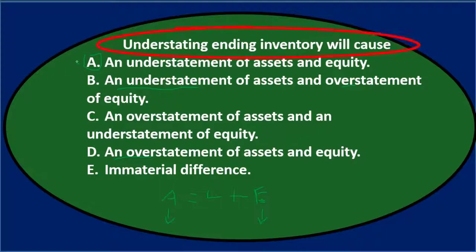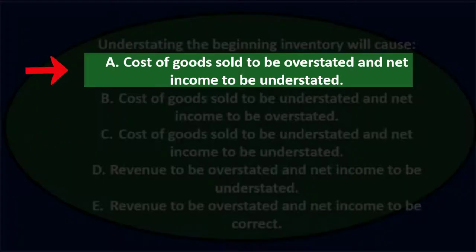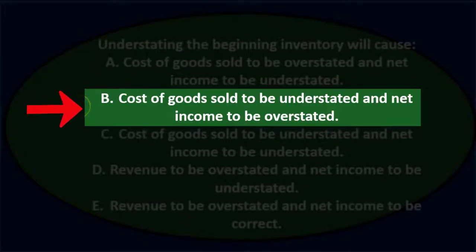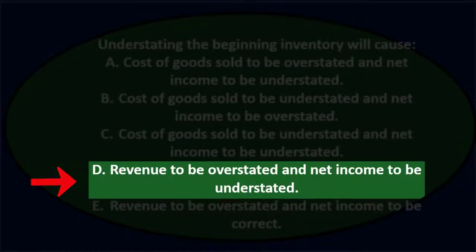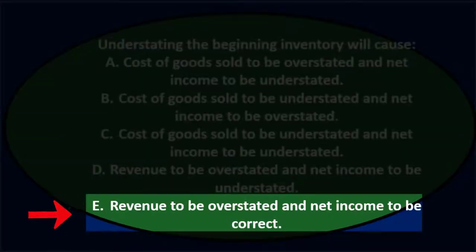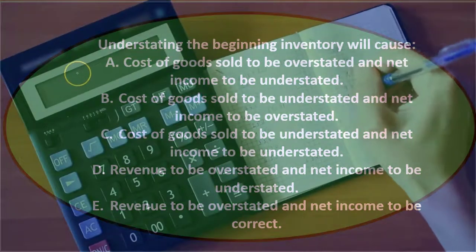Understating ending inventory will cause A — an understatement of assets and equity. Next question: Understating the beginning inventory will cause — A. Cost of goods sold to be overstated and net income to be understated, B. Cost of goods sold to be understated and net income to be overstated, C. Cost of goods sold to be understated and net income to be understated, D. Revenue to be overstated and net income to be understated, and E. Revenue to be overstated and net income to be correct.